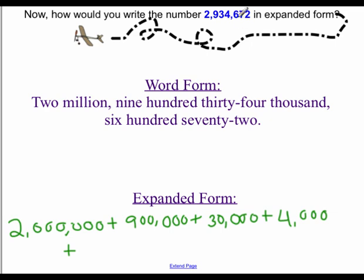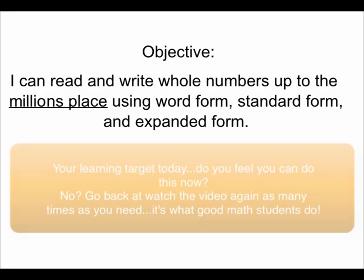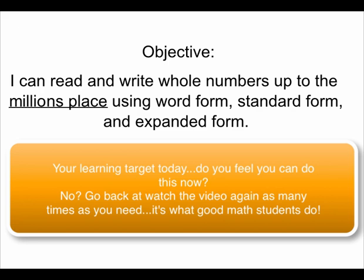Plus, let's move over to our hundreds place — I have six in the hundreds place, so I have six hundred. Plus, my tens place, I have a seven, so I have seventy. Plus, a two in the ones, so I have two ones. That would be my expanded form. And if you added that all together, guess what number you get? Your standard form number. Thank you.